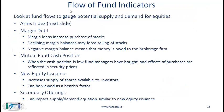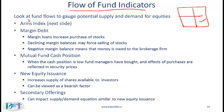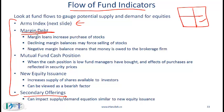Finally, we have flow of fund indicators, which look at fund flows to gauge potential supply and demand for equities. The Arms index is perhaps the most testable one. Others include margin debt, mutual fund cash position, new equity issuance, and secondary offerings. Margin loans increase stock purchases, but a declining margin balance may force the selling of stocks — indicating that prices are likely to come down.